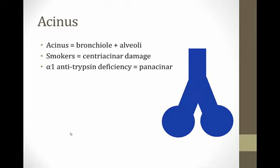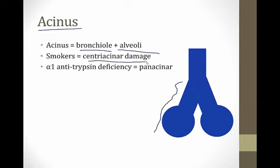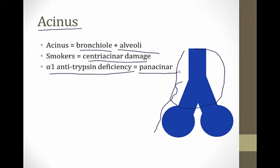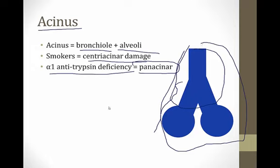Let me review an important term for understanding emphysema: the acinus. This word means berry, and the acinus in the lungs is the bronchiole plus the alveoli. Smokers who get emphysema get centriacinar damage — damage to the branch portion with less damage to the alveoli. Patients who have antitrypsin deficiency get panacinar damage — damage to the entire acinar structure. It's very high yield to know that smokers get centriacinar (sometimes called centrilobular) damage, and antitrypsin patients get panacinar or panlobular damage.